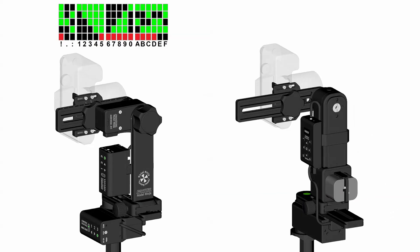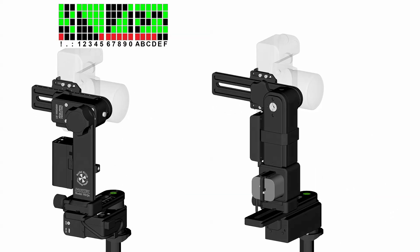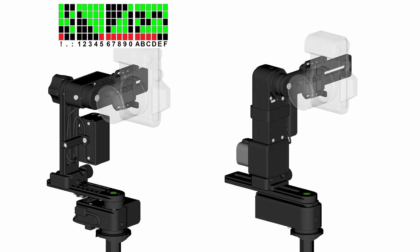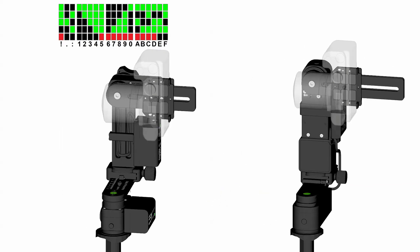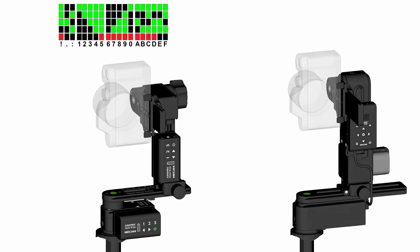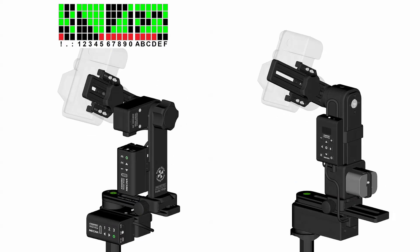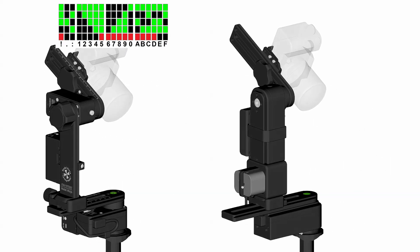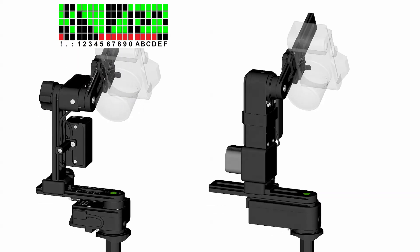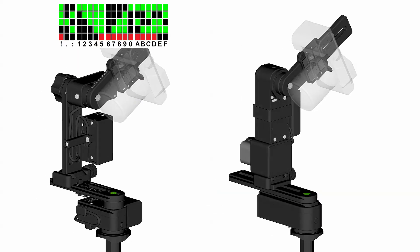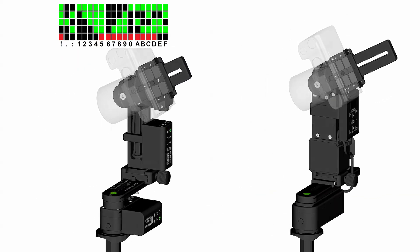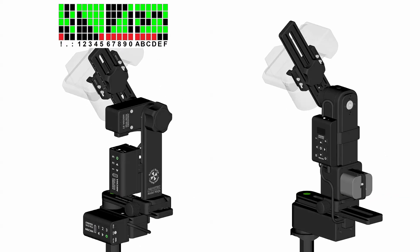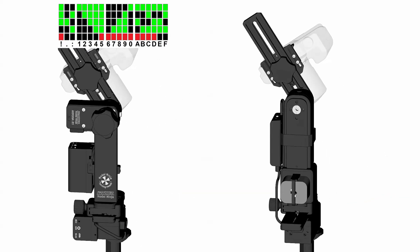On the left, we have a Mecha dual-axis combo, which consists of two E1 rotators and two C1 controllers. On the right, a C2 controller — a dedicated dual-axis controller equipped with an OLED display — and two E2 rotators. Currently, Fanotec produces three motorized rotator models: E1, E2, and P1, which can be used interchangeably.